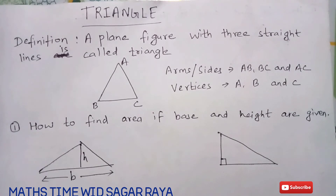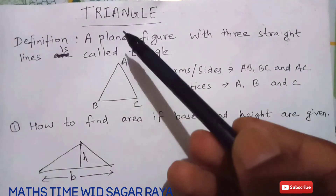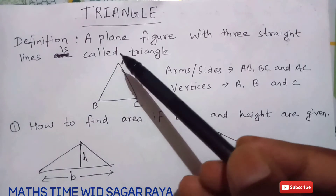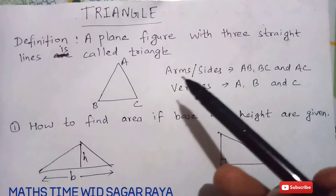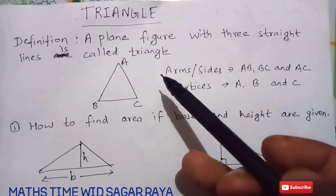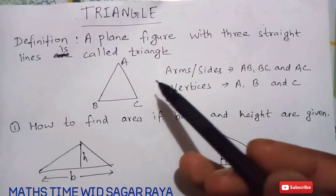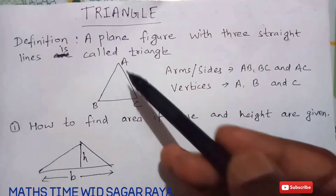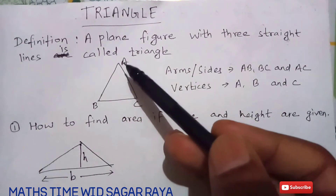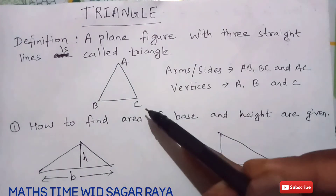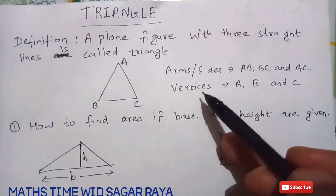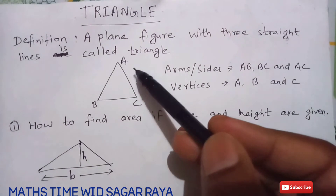Let's start our topic. A triangle can be defined as a plane figure with three different straight lines. This is triangle ABC. In triangle ABC, the arms or sides are AB, BC, and AC, and similarly there are three vertices: A, B, and C.